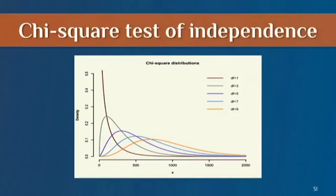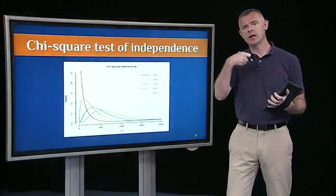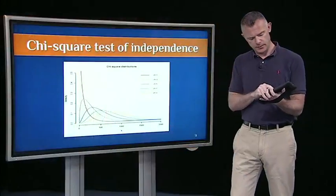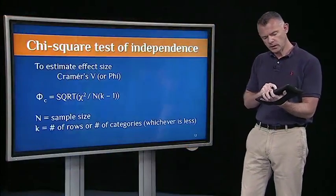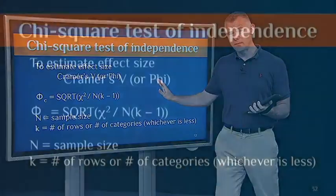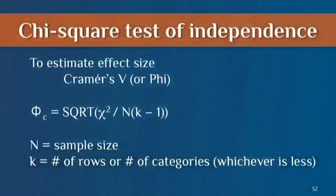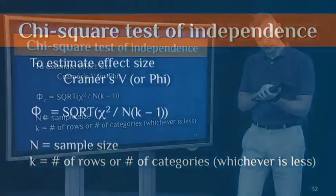We get our p-values from the actual chi-square value and degrees of freedom. We also want to estimate effect size to supplement the null hypothesis significance test and p-value. Again, it's Cramer's V or phi, and we looked at the formula in the last segment. We'll do that for this example as well.